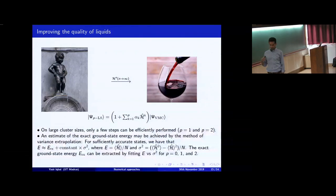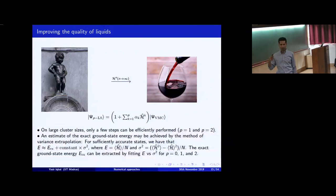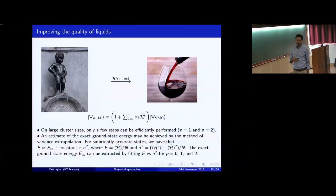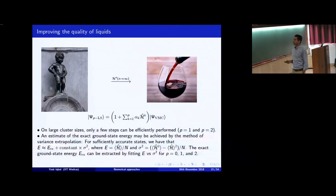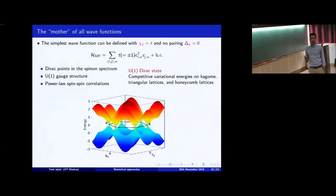As we increase the system size, the calculation of larger and larger powers of the Hamiltonian becomes computationally costly. It's large and polynomial, but you can do it with some parallelization. I know one student who went up to 10 Lanczos steps. Generally you do up to two Lanczos steps, and I'll show you that you can already recover the exact diagonalization energy within a few error bars.